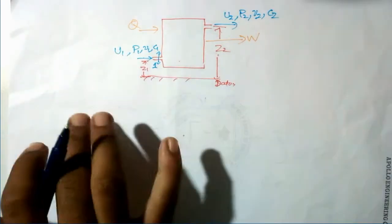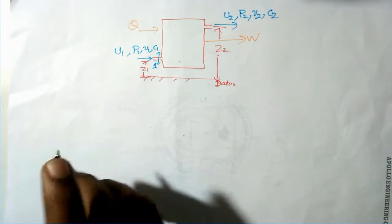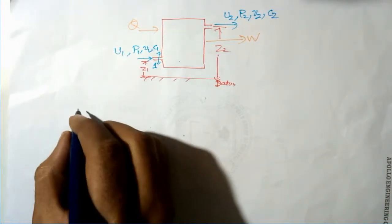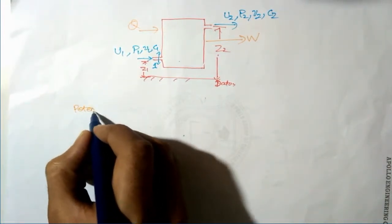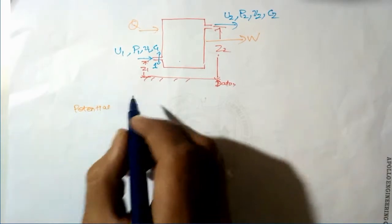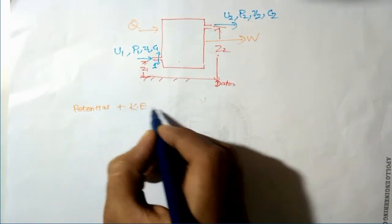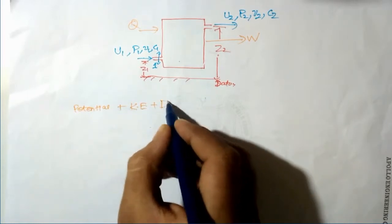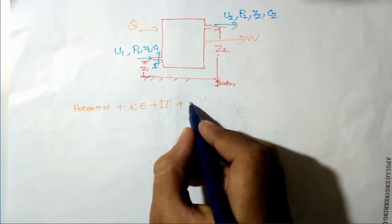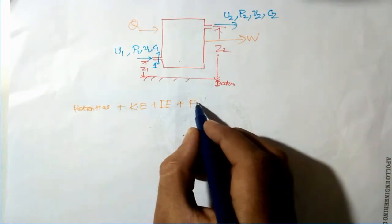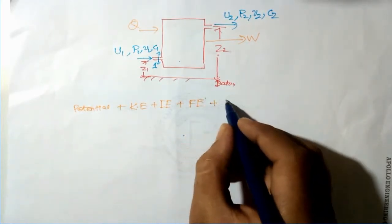If we balance these energies, that is: potential energy plus kinetic energy plus internal energy plus flow energy plus heat at the inlet equals the same terms at the outlet plus work output.